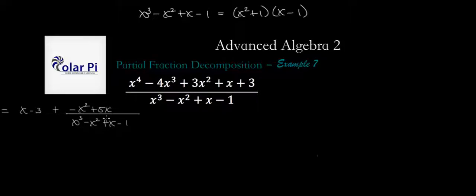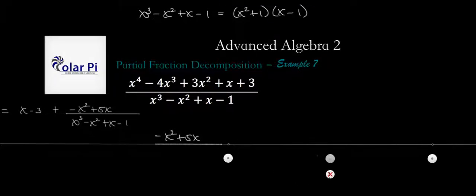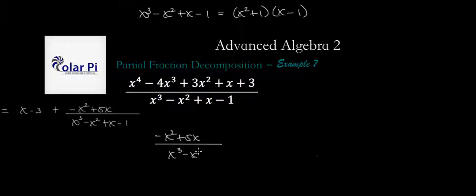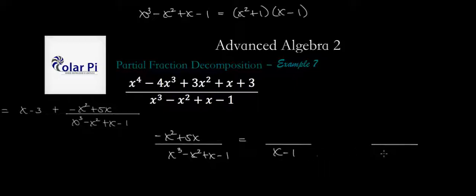And we perform the partial fraction decomposition on this part, and so that means that we write that negative x squared plus 5x divided by, let's use a ruler, so that you don't watch me drawing horizontal lines over and over until I get right. So this divided by x cubed minus x squared plus x minus 1, we're going to say is equal to, one of our denominators is going to be the linear factor, and then the other is going to be the quadratic factor. So, I guess, let's write the linear factor first, so x minus 1, and then x squared plus 1 right here.